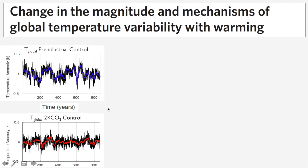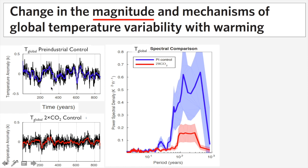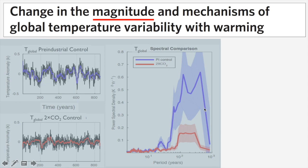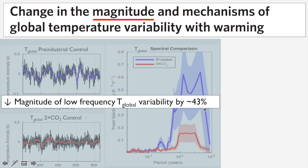Immediately you can see that the magnitude of variability has decreased, particularly at low-frequency timescales. The colored lines represent variability at 15 years and longer, and that variability has declined. Looking at a spectral comparison, variability at basically all timescales beyond about a decade has decreased in the doubled-CO2 control run — by about 43% at these longer timescales.